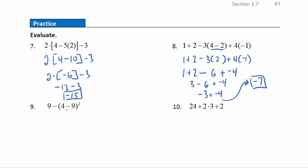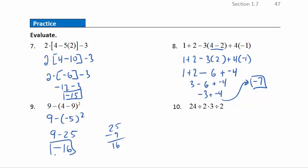Question nine: starting in the parentheses gives −5. Then exponents: (−5) squared is (−5) times (−5), which is positive 25. So the expression becomes 9 minus 25. Since 25 minus 9 is 16, the final answer is −16.